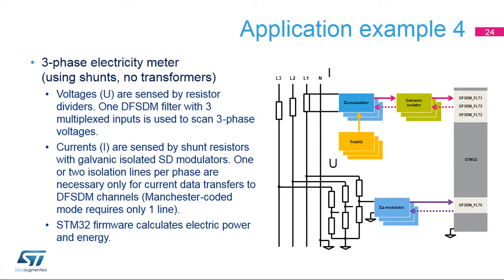This example shows the three-phase electricity meter design using shunt resistors for sensing current, with no need for expensive current transformers. Voltages are sensed by three resistor dividers and external sigma-delta modulators. Currents are sensed by three shunt resistors, each sensed by one sigma-delta modulator. Because each sigma-delta modulator operates at a high-phase voltage, galvanic isolation is used for data transfers into the DF-SDM. If the sigma-delta modulator uses the Manchester-coded serial protocol and has an internal clock source, only one isolator per phase is necessary. If the SPI serial format is used, two isolators per phase are necessary. Each sigma-delta modulator is powered from a separate DC supply voltage.